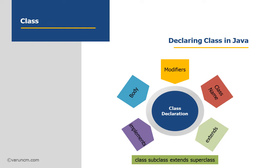The third component that needs to be present while declaring a class is extends. This is not mandatory — when there is a need for it, you could use it. In the previous video, I explained the concept of inheritance, where a superclass and a subclass are present and the subclass derives the properties of the superclass. When you are going to derive the properties of the superclass from the subclass, you need to use this keyword — extends. The syntax is: class, name of the subclass, extends, name of the superclass.